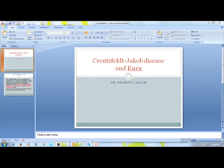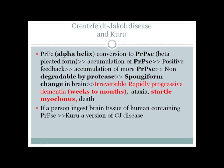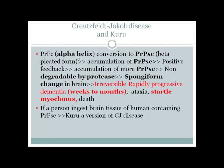Let's talk about Creutzfeldt-Jakob disease and Kuru. The basic pathology in Creutzfeldt-Jakob disease is the conversion of a protein in the CNS called prion protein C (PrPC), which is mainly an alpha-helical structure, to PrPSc, which is a beta-pleated sheet form.